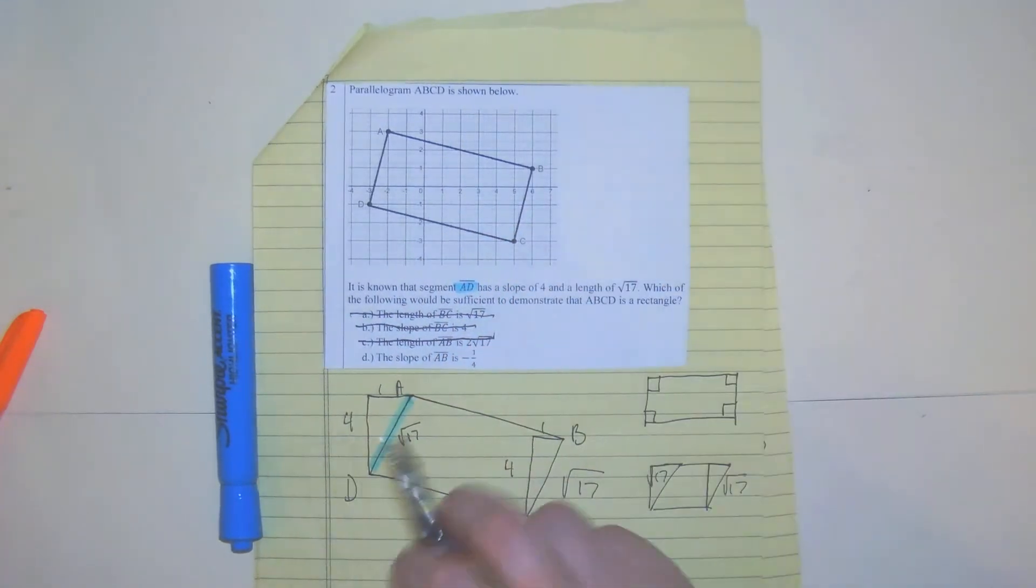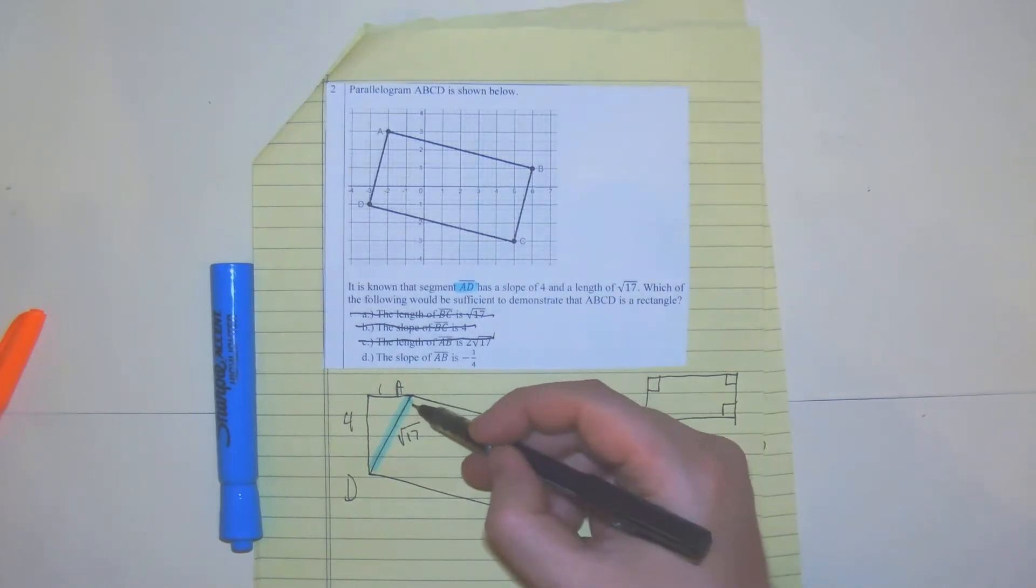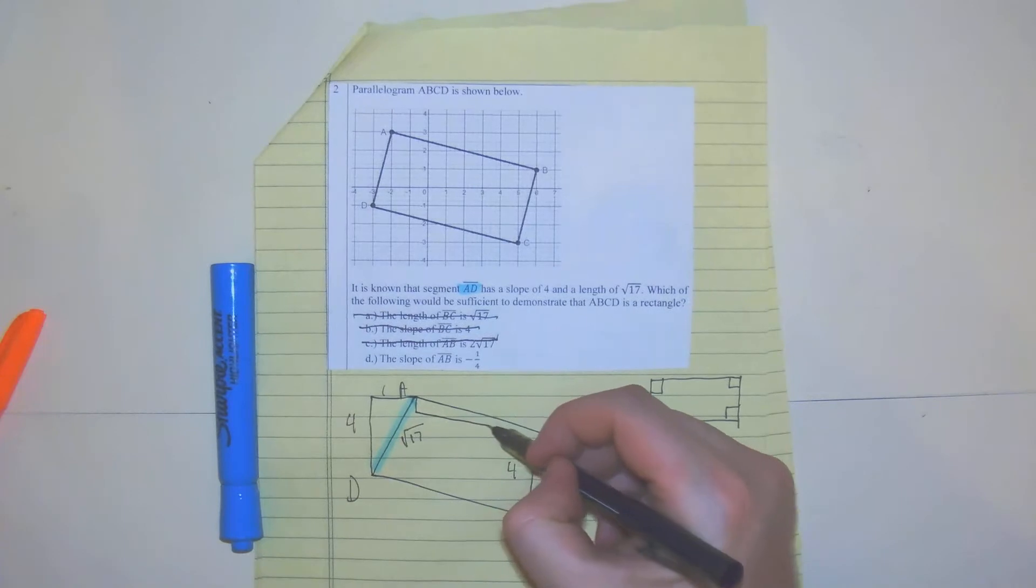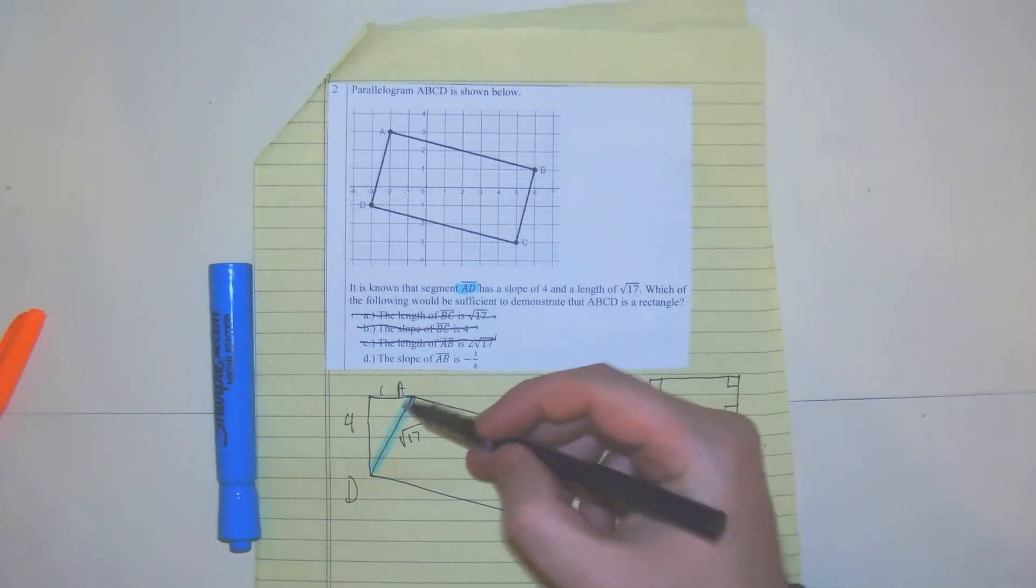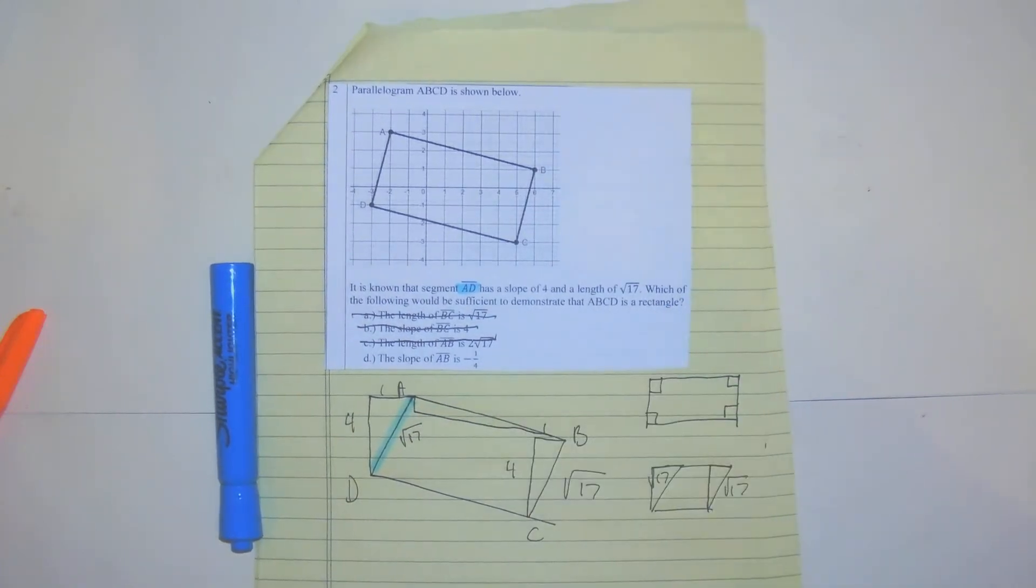So the slope of AB is negative one-fourth. So it's not going to be perfect right there because it's probably going to go like two times based off the length.